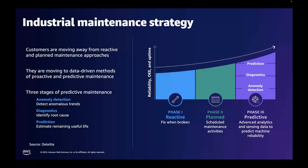It's this third phase of predictive maintenance that Amazon Monitron can really help customers. In this phase, the advanced analytics and sensing data allows the prediction of machine reliability better than the other two phases. Here, we detect anomalous trends through anomaly detection, identify the root causes through diagnostics, and estimate the remaining useful life by making predictions based on machine learning and continuous sensing analytics.